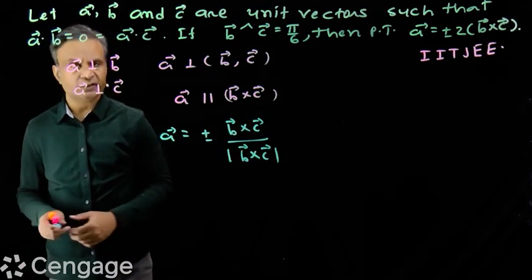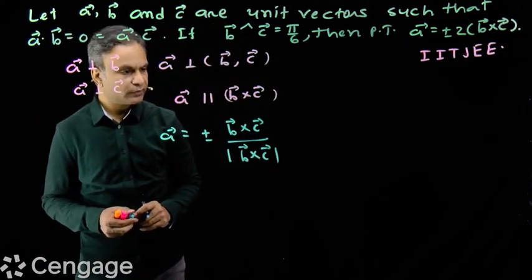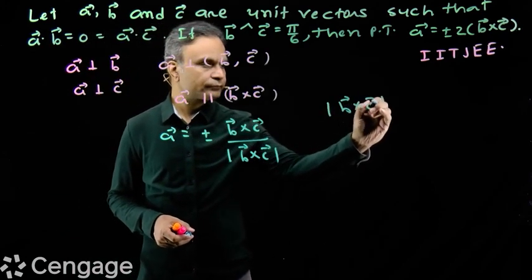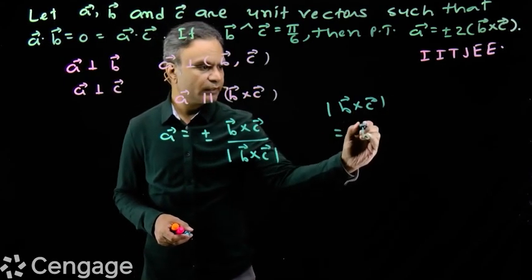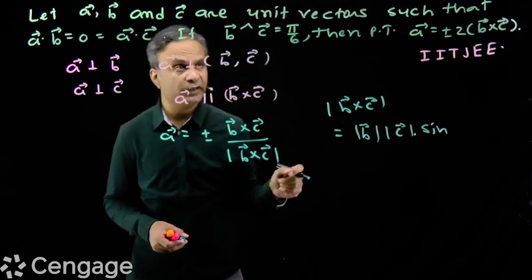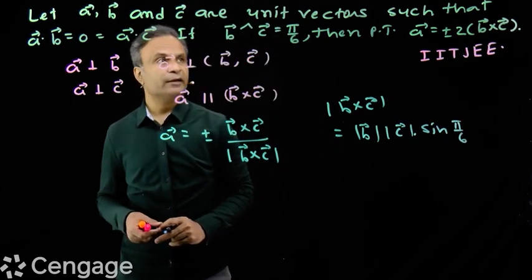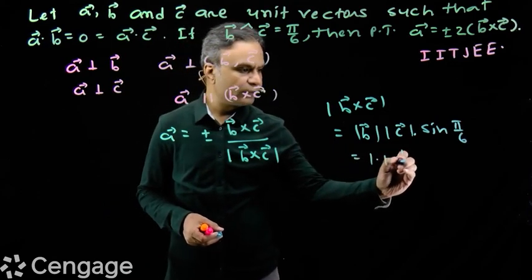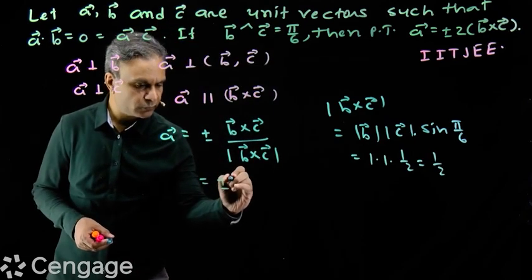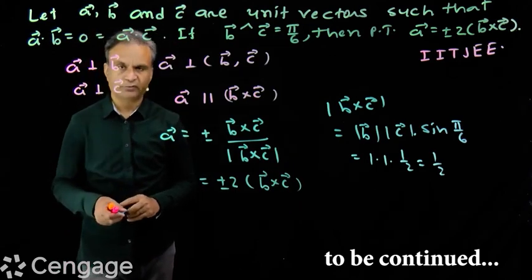So vector a equals plus or minus b cross c over modulus of b cross c. To prove the result, we need to show that modulus of b cross c equals one half. The modulus of b cross c equals modulus of b times modulus of c times sine of the angle between b and c, which is pi by six. Since a, b, c are unit vectors, this gives one times one times sine(pi/6) equals one half. Substituting back, vector a equals plus or minus two times b cross c.